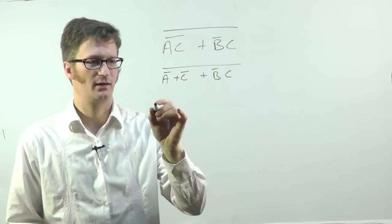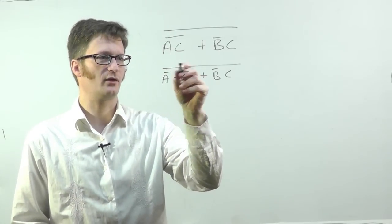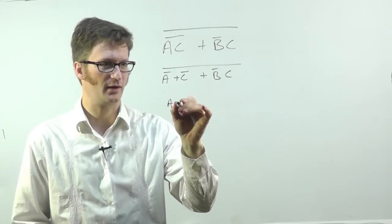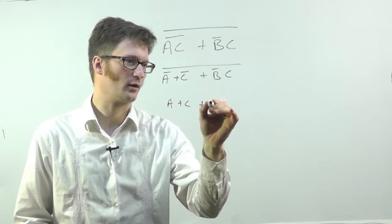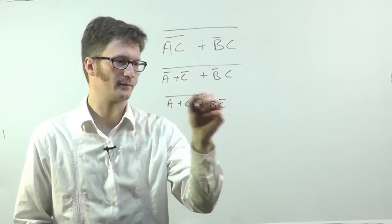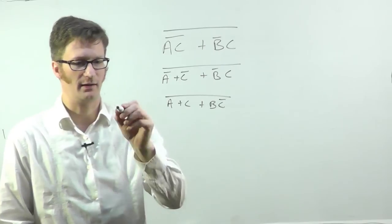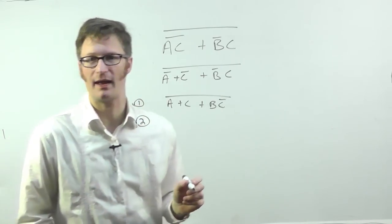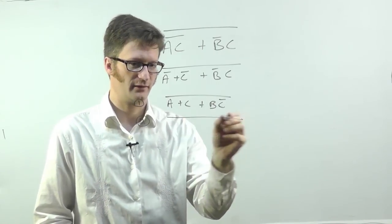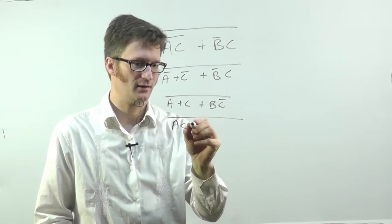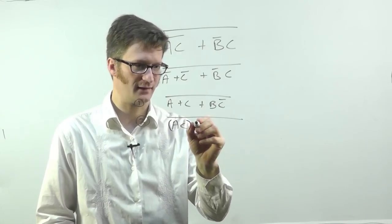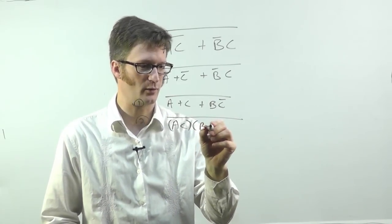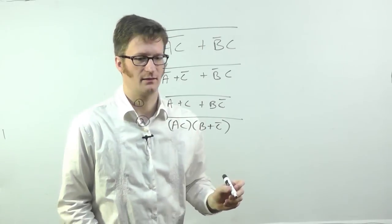And so now I'll apply to the whole thing to get rid of this bar up top. And first I'll invert the individual terms, A or C or B C bar. And then I will just put that as step one. Step two is we're going to swap and for or and vice versa. So we have A C, and that is times, or anded with B or C bar.